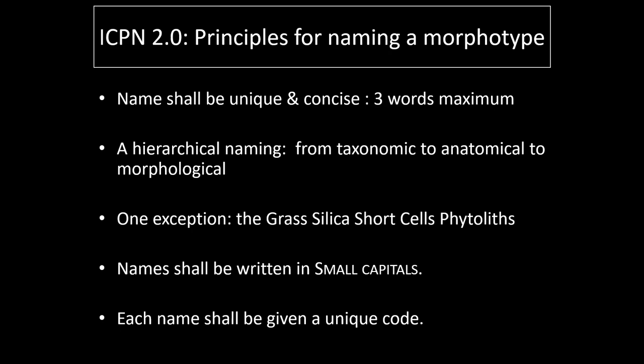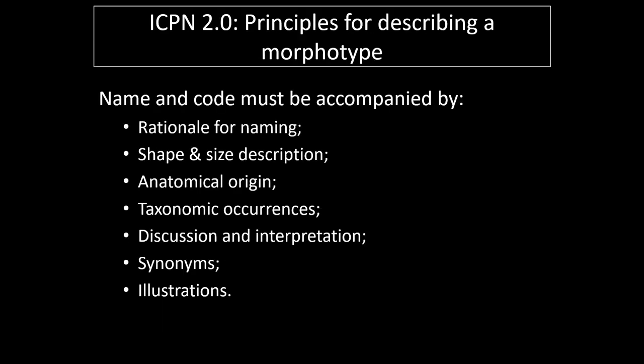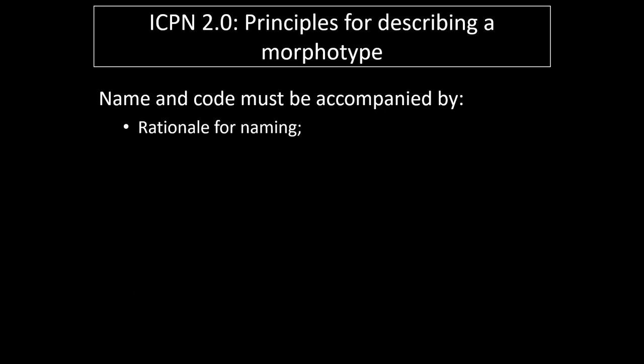We also established a whole set of principles for describing. To be validly published, a name and code must be accompanied by a rationale, a shape description, the anatomical origin, and so on. The rationale for naming shall provide and explain why a new name is given or an established name is retained. It should also include information about why the morphotype deserves a taxonomical, anatomical, or morphological name.